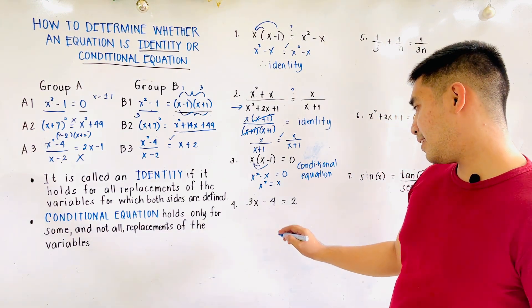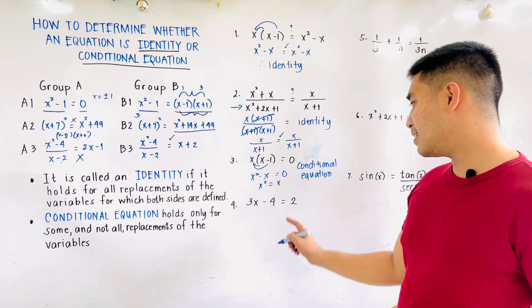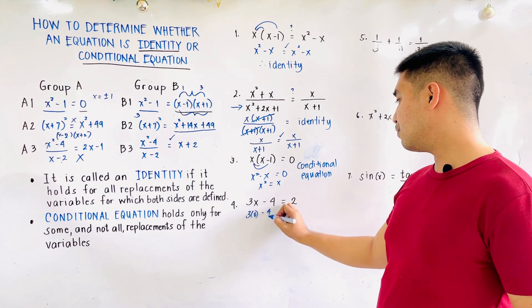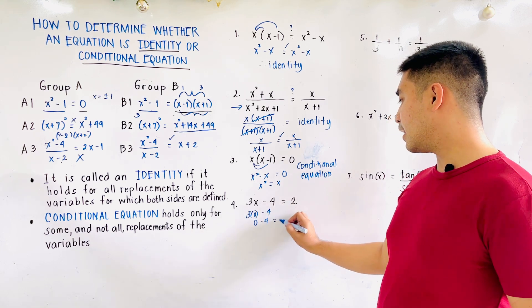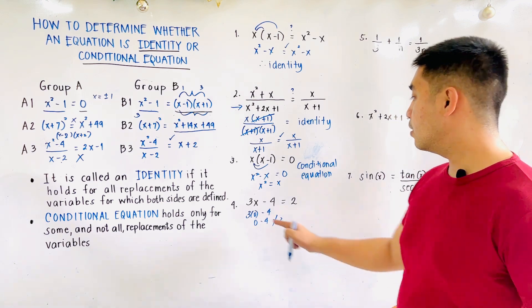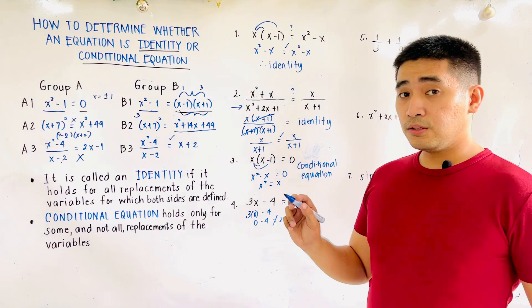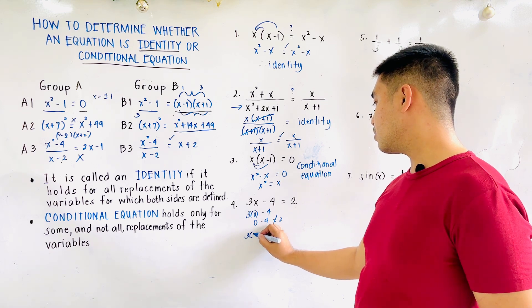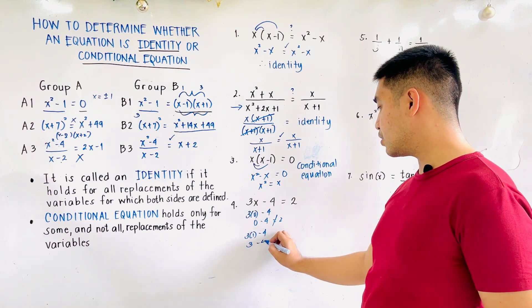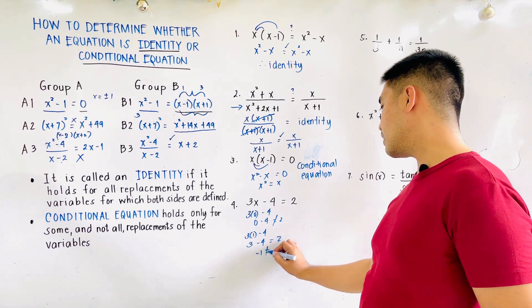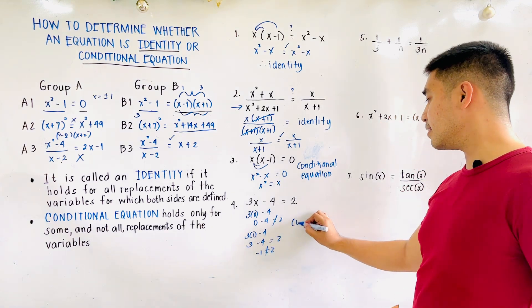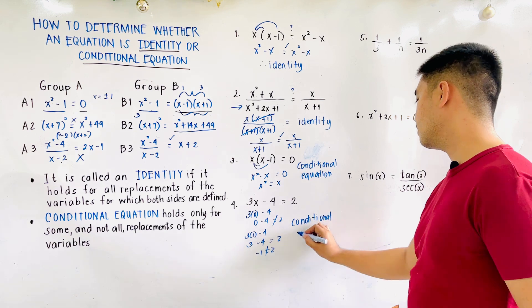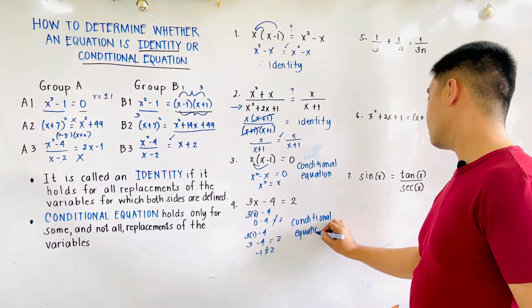For number four, we have 3x minus 4 is equal to 2. Let's try x equals 0: 3 times 0 minus 4 is negative 4. Is negative 4 equal to 2? They're not equal. Is it true when x equals 1? 3 times 1 minus 4 is 3 minus 4, which is negative 1. Is negative 1 equal to 2? No. Therefore, we could say that this is a conditional equation.